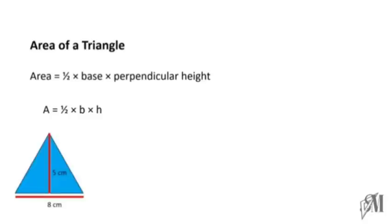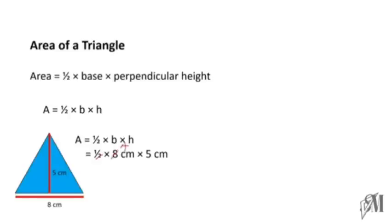Now take this triangle here — it's very clear that 8 centimeters is the length of the base, and from the base to the vertex of the triangle the perpendicular height is 5 centimeters. So once these values are applied to the equation, you get half into 8 into 5 centimeters. The 2 here can be cancelled with 8 to give 4, and so 4 into 5 gives you 20 square centimeters.